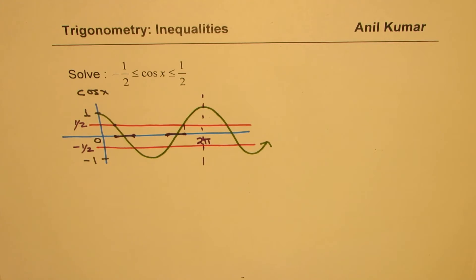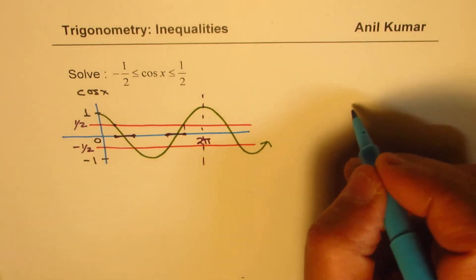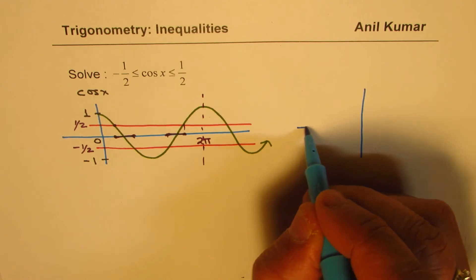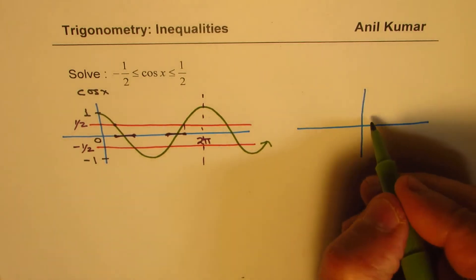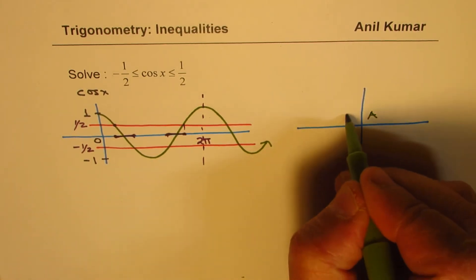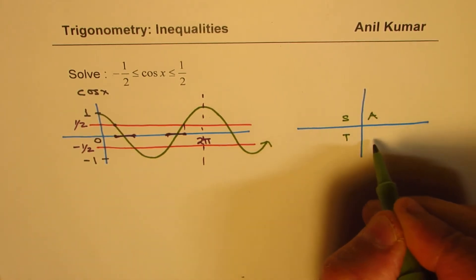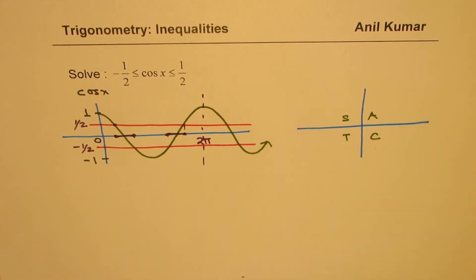Now what are these points? Let us look into this wave on the coordinate plane. So as you know here, all are positive here. Sine is positive, tan is positive in coordinate 3, cosine in coordinate 4.